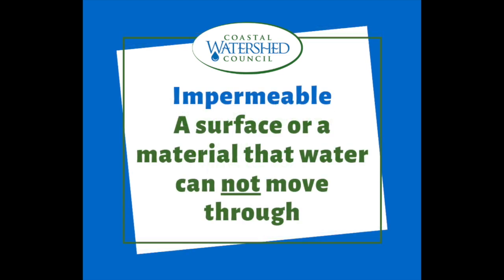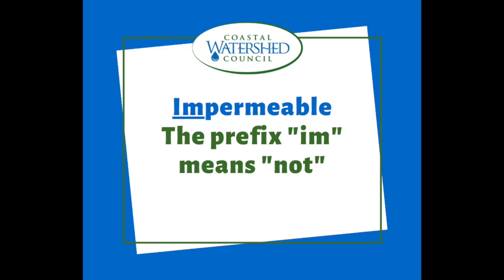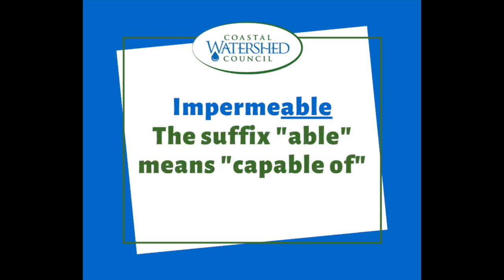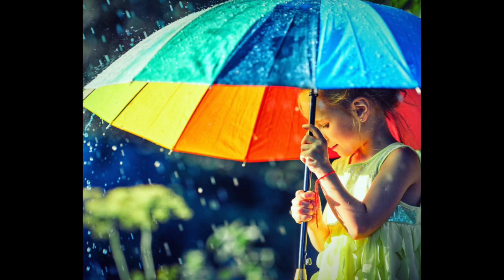Welcome back! Let's talk about the word impermeable. Impermeable is a surface or a material that water cannot move through. The word impermeable starts with the prefix 'im,' which means 'not.' We already know that the suffix 'able' means 'capable of.' So put together, it means that water is not capable of going through something — just like an umbrella.